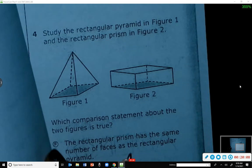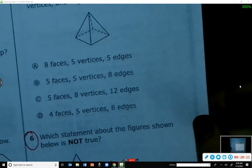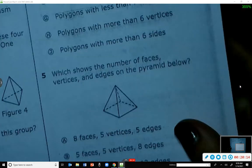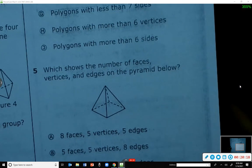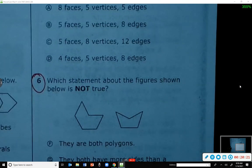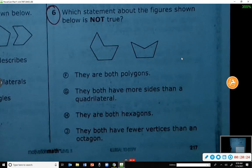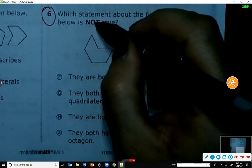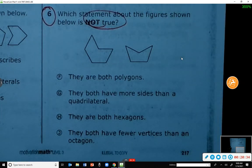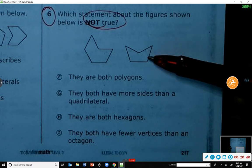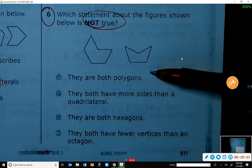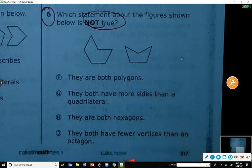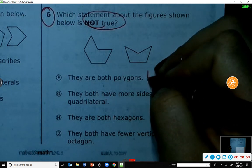I'm going to do one more with you guys. That is number 6 on the next page. And then the rest of the problems you will be free to do on your own. Which statement about the figure shown below is not true? So sometimes we get confused on the words when they say not true. We're looking for one that's not true that does not make these shapes true. F: They are both polygons. They are both polygons, yes. But we want the one that's not true, so we would put T for true.